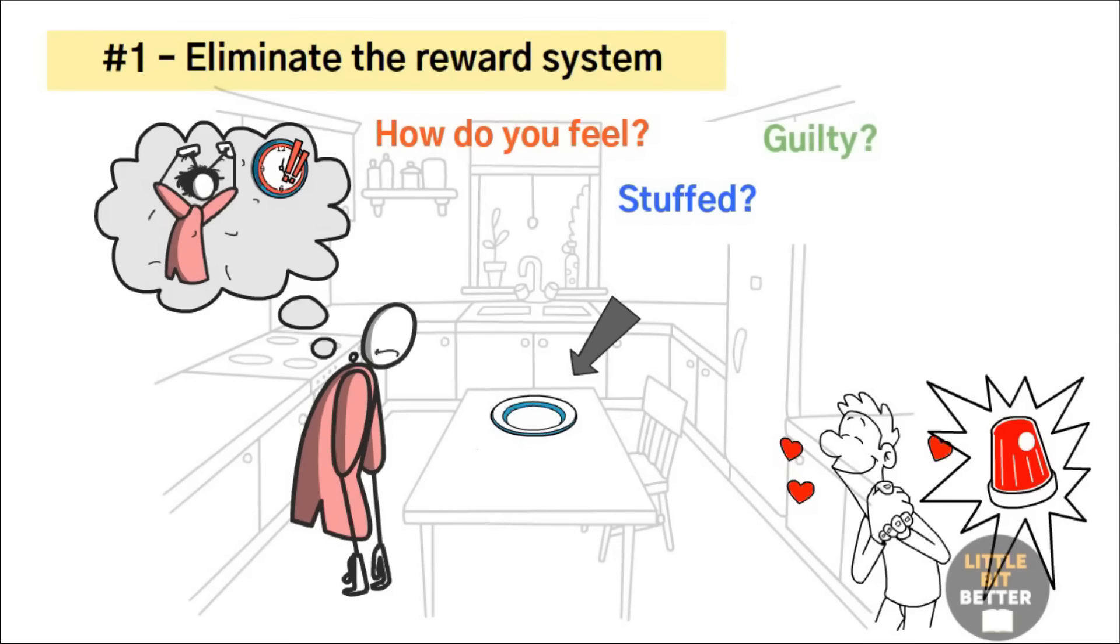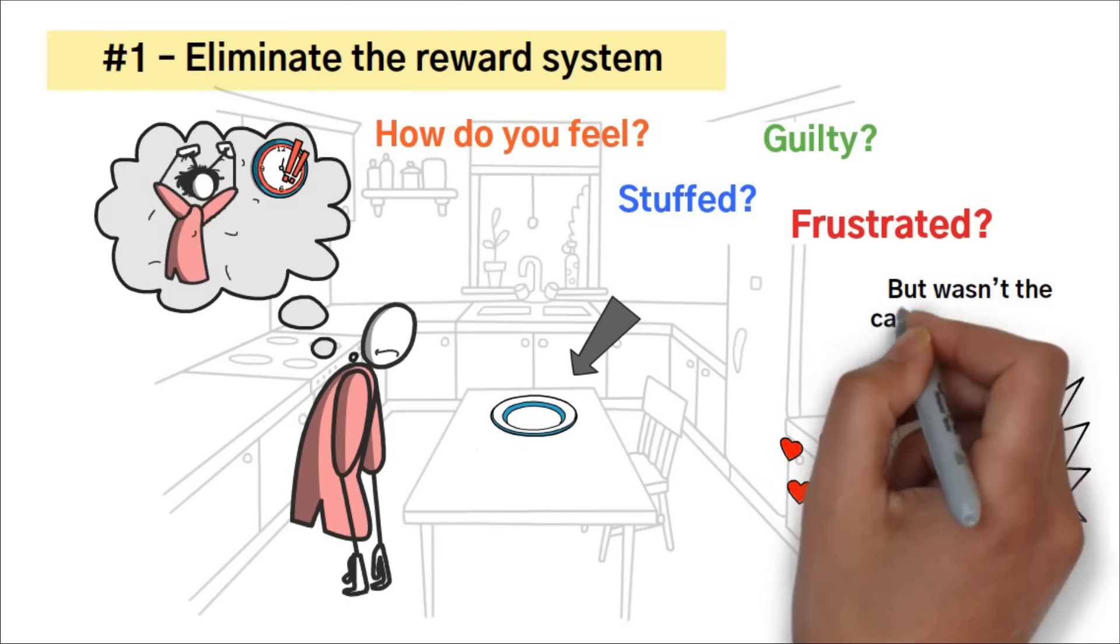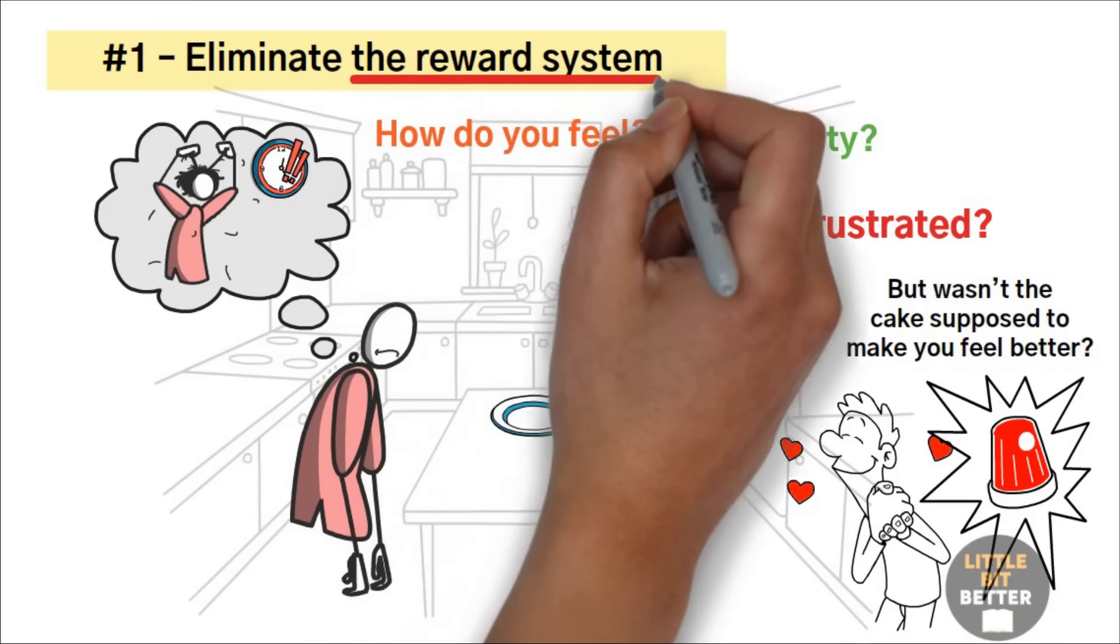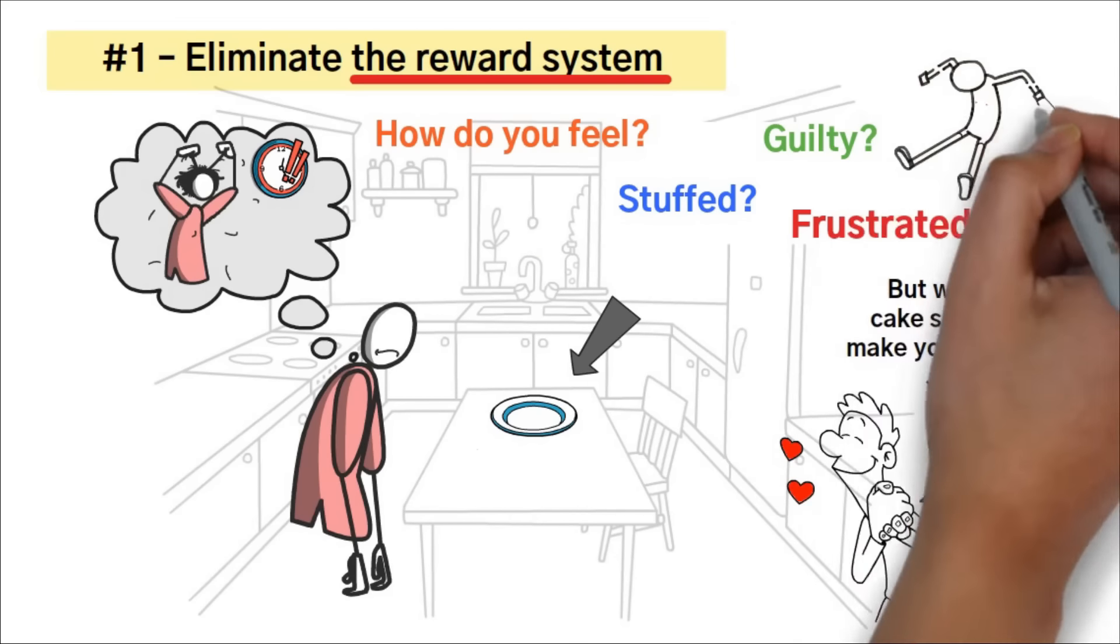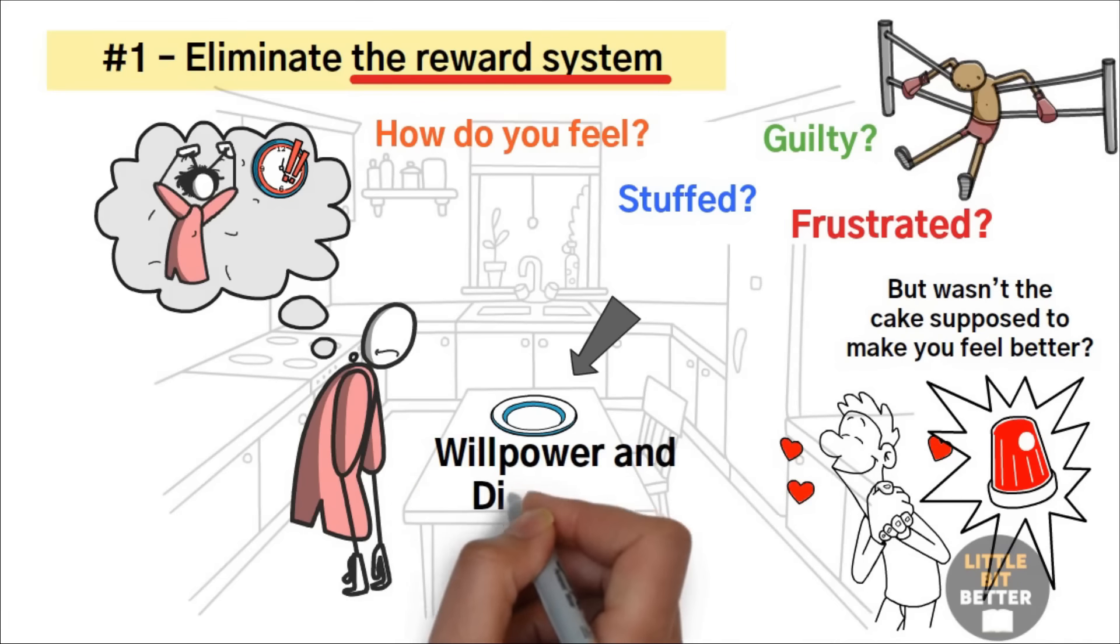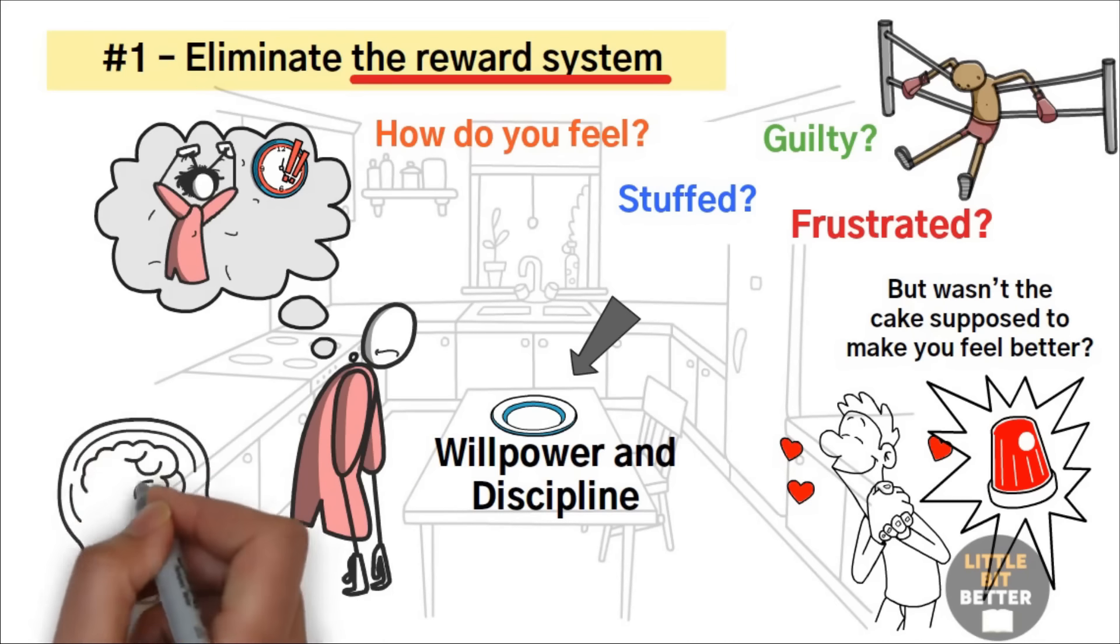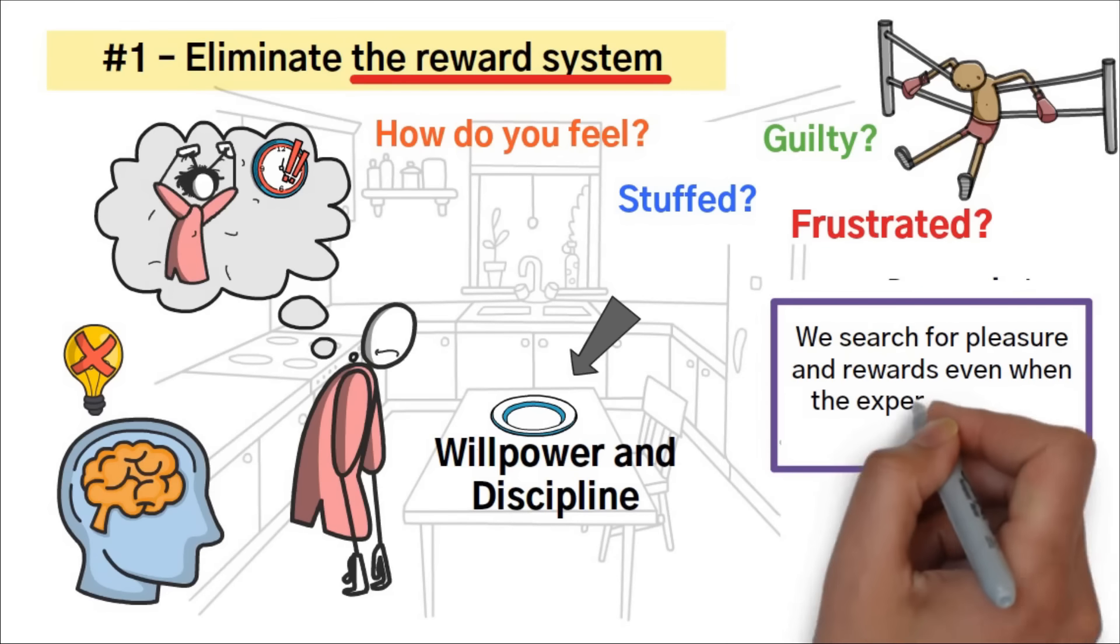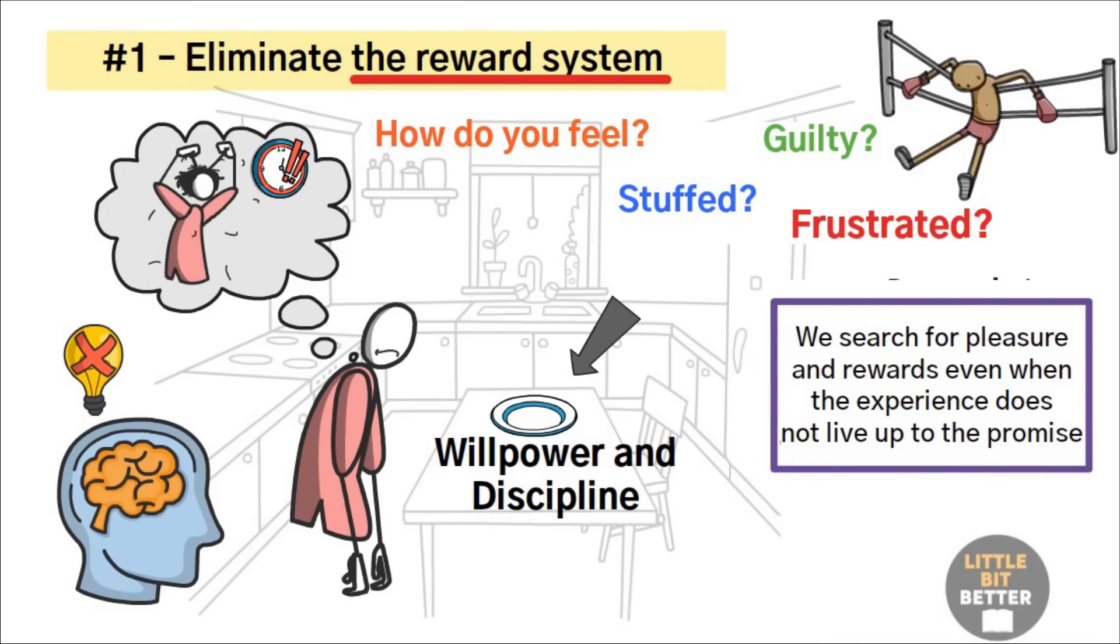You deserve good things after the terrible day you've had. Before you know it, there's barely any cake left. Have you eaten all of it? Oh no. How do you feel? Stuffed? Guilty? Frustrated? Probably all of them. But wasn't the cake supposed to make you feel better? The reward system can be one of your greatest enemies when it comes to willpower and discipline. It's also a way that your brain uses to trick you.